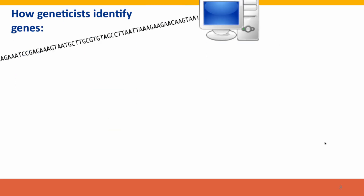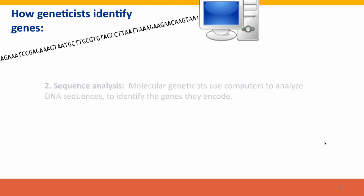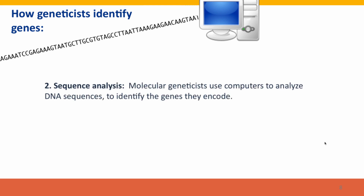Geneticists really have two fundamentally different ways of identifying genes. One is genetic analysis, which started with the very first geneticists back in the day of Mendel, who used crosses between pea plants with different phenotypes to investigate the patterns of inheritance. Molecular geneticists now have access to enormous quantities of DNA sequences relatively cheaply, which means it's possible to do a lot of genetic analysis without any crosses. In many cases, we supplement or complement the genetic analysis — the crosses — with sequence analysis, where we use computers to analyze DNA sequences and identify the genes they encode.